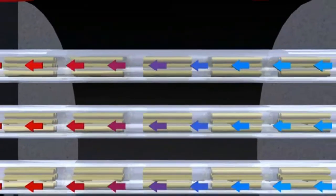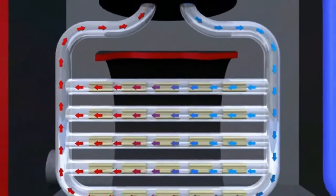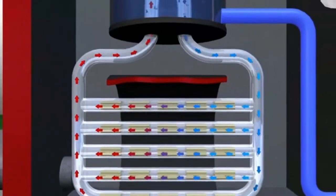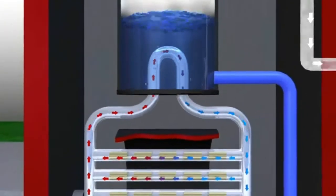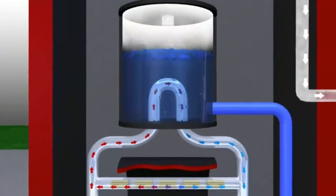The heated heavy water flows through a closed loop system that's pumped through the reactor to a set of steam generators where it transfers the heat to ordinary water. When that water boils, it turns into steam.